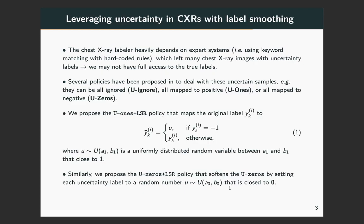Another challenge related to this study is how we can handle uncertain chest images. Several policies have been introduced to deal with this problem. For example, uncertain labels can be ignored, mapped to positive, or mapped to negative.